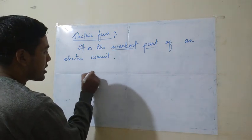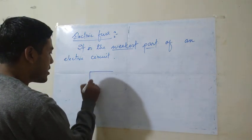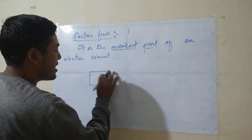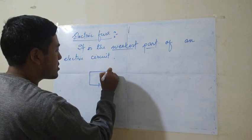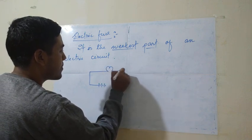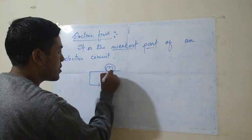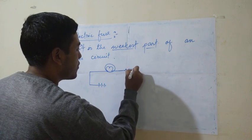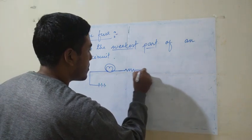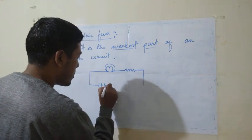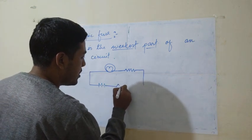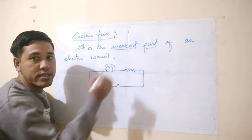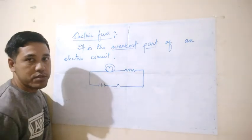I will draw one electric circuit. Look here. This is the connecting wire, this is the battery. Say this is one appliance — say this is the electric valve. Say this is another appliance — say this is the old refrigerator. This is our switch. So we have the valve, the refrigerator, the battery, and the switch.